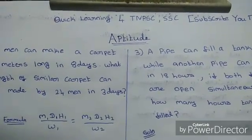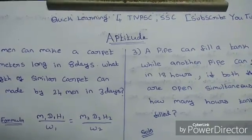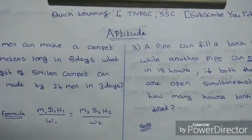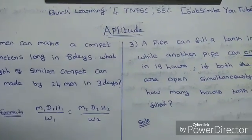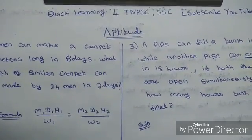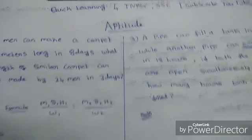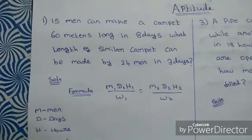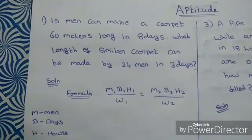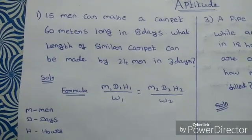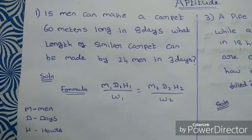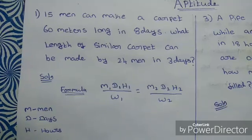Good evening friends. In our aptitude session, we will solve time and work problems. I will ask you about TNPSC-SSC questions from recent times. First question: 15 men can make a carpet 60 meters long in 8 days. What length of a similar carpet can be made by 24 men in 3 days?